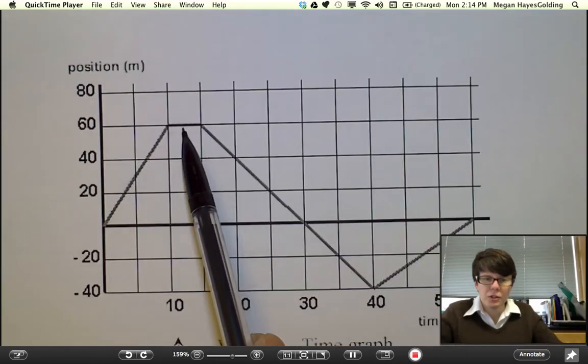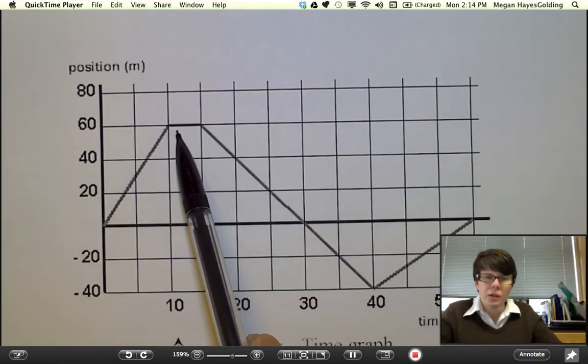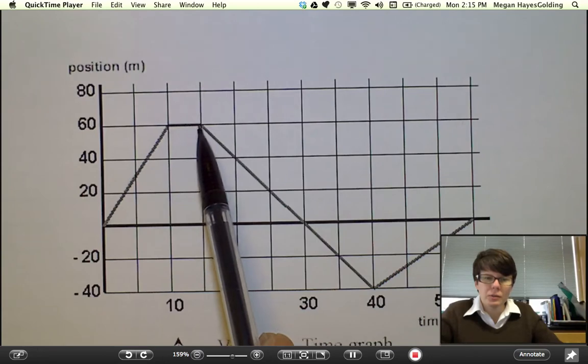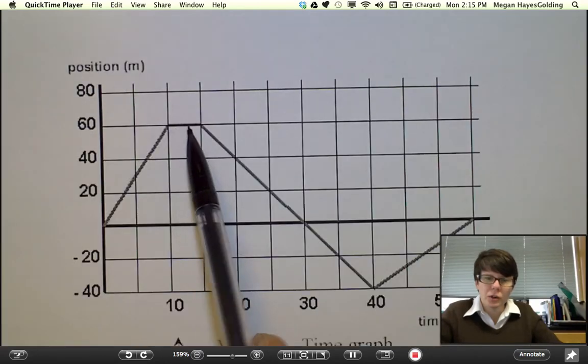Here's a case of zero velocity. The slope of the line is zero, so we're undergoing zero velocity.